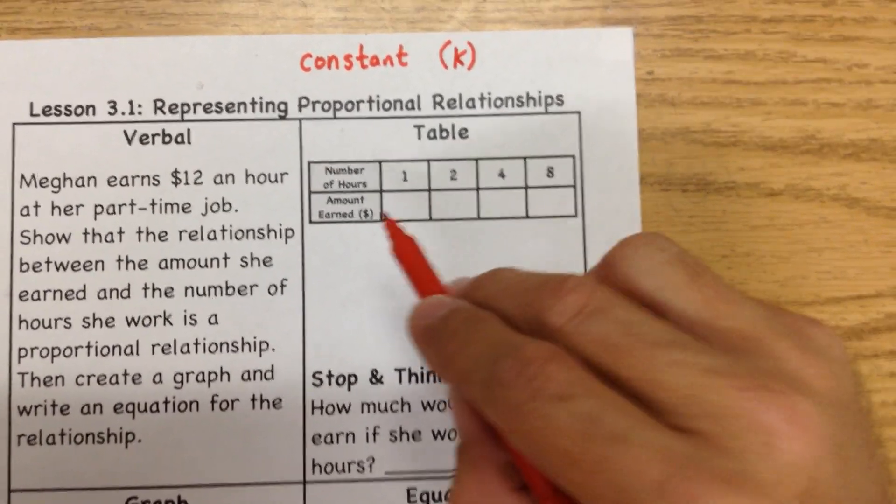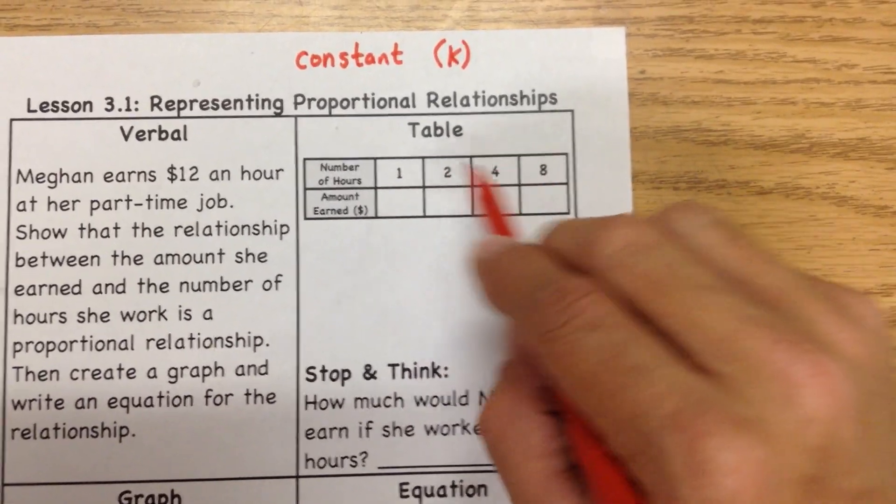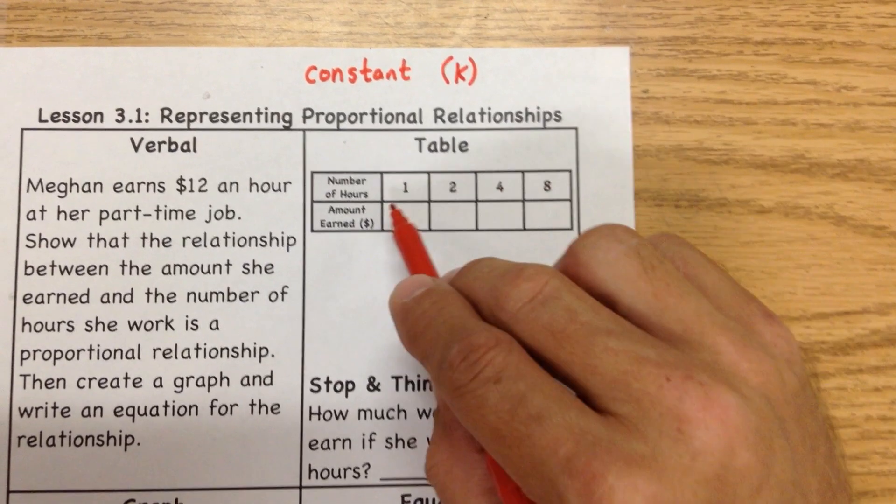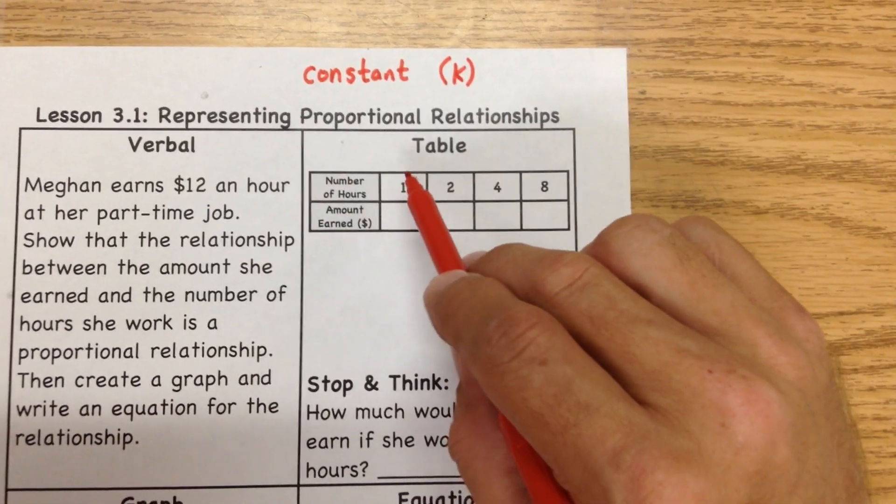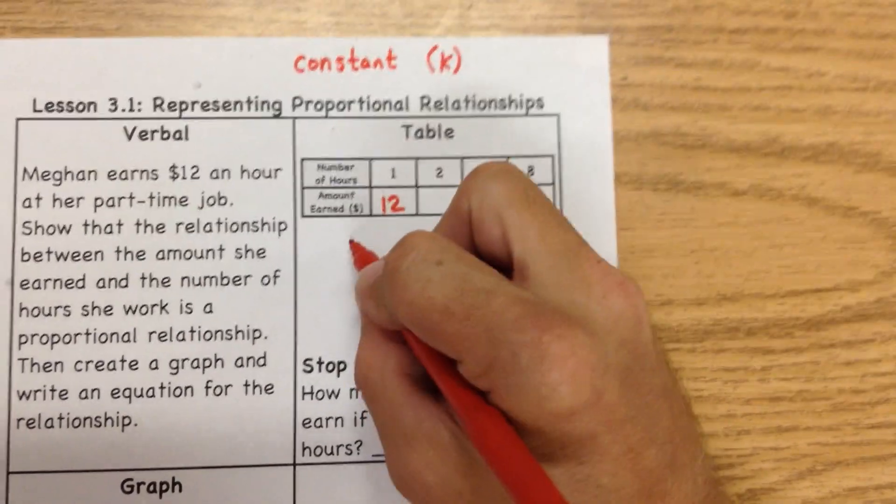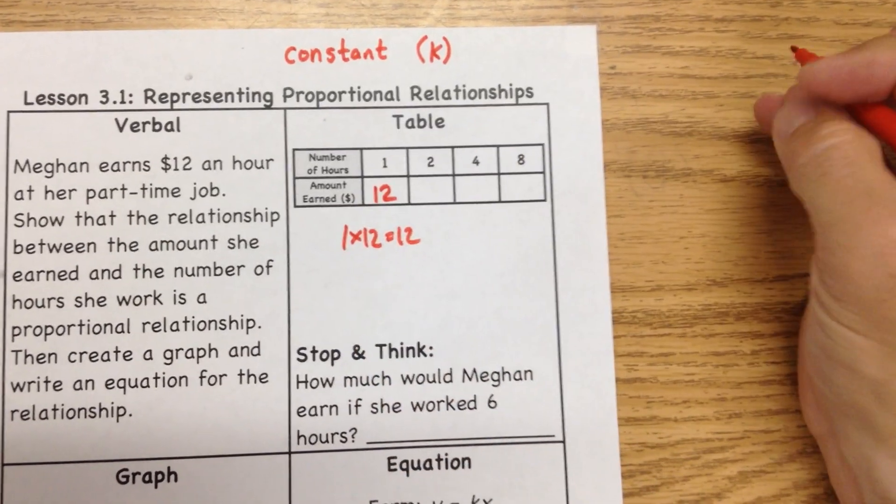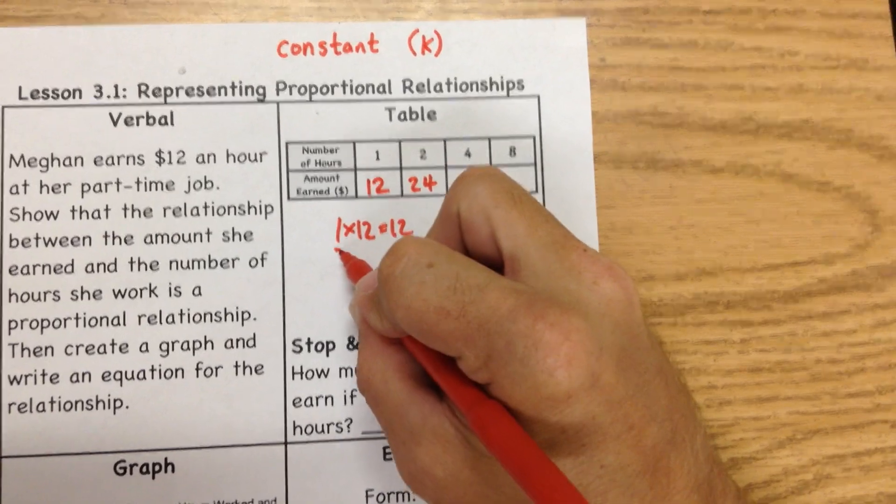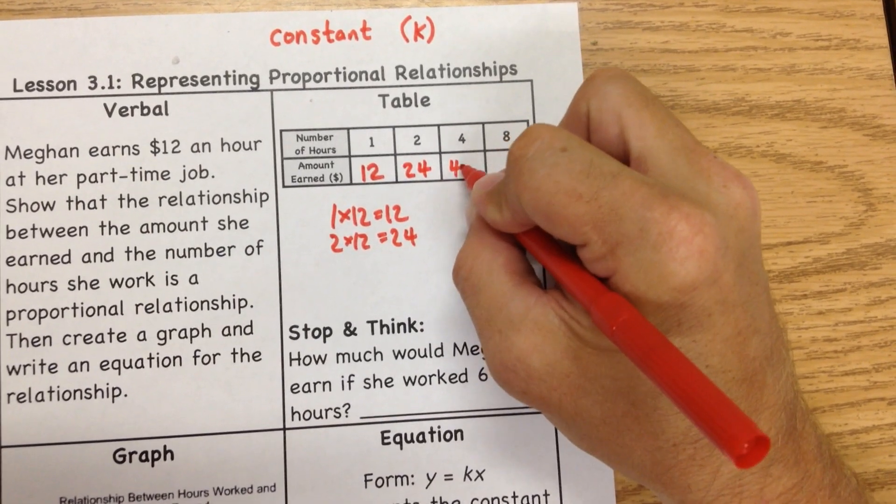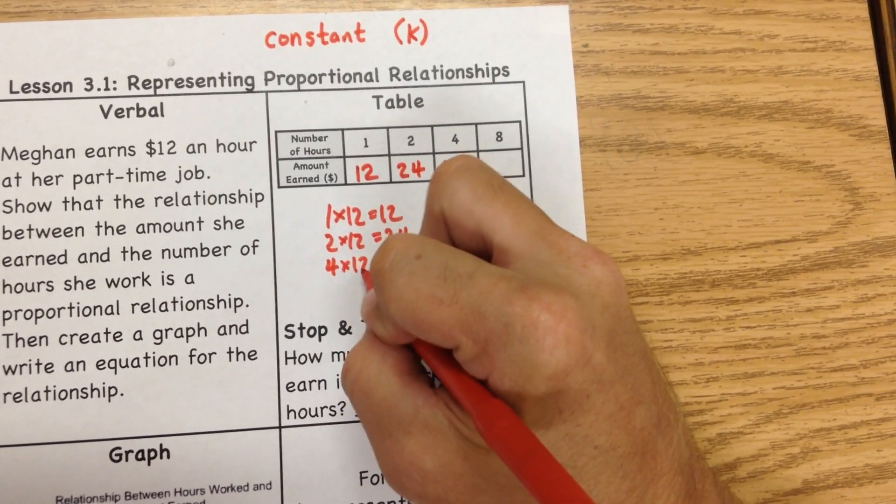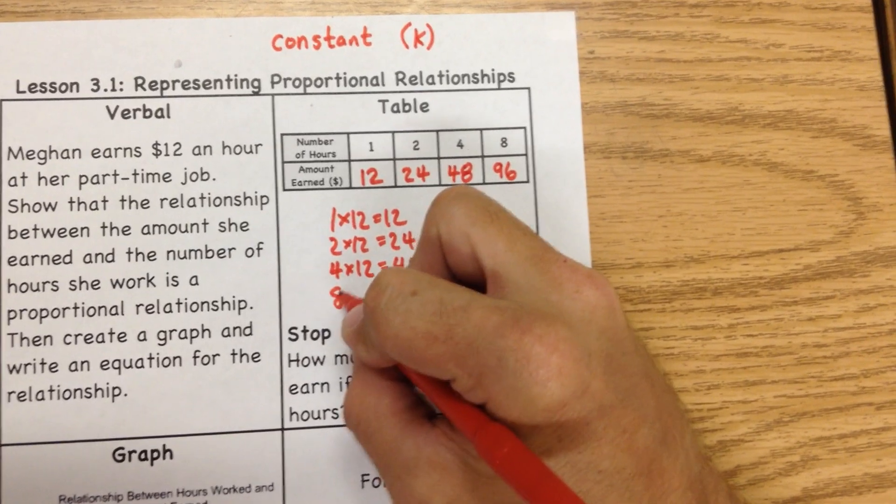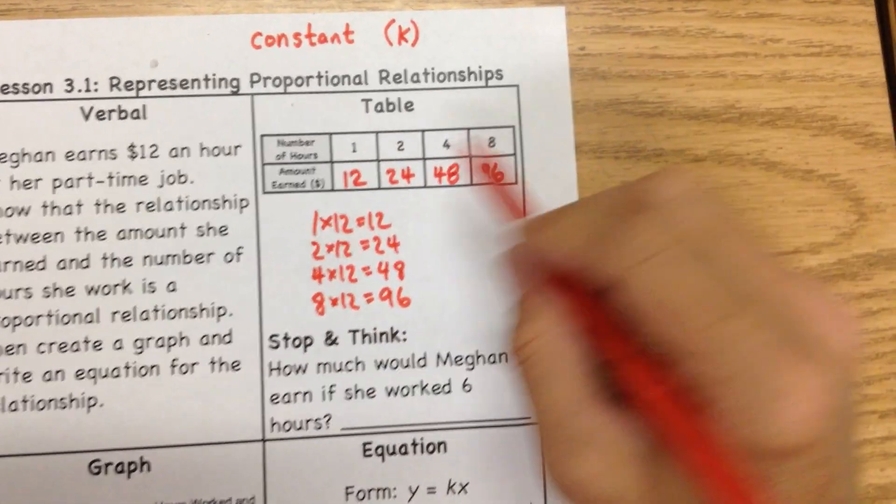So now we're going to create a table and a graph. The first thing we're going to do is go right here. And we want to be very careful when we do these that we're actually looking up at the top to see what the number of whatever it is they're giving us is, not the same all the way through. For example, this one goes 1, representing how much she made in 1 hour, which is just 1 times 12. For 2 hours, she made $24, which is just 2 times 12. But then it skips all the way to 4. And 4 times 12 is 48. And then 8 times 12 is 96. So when you're filling these out, make sure that you're actually using the numbers that they give you.